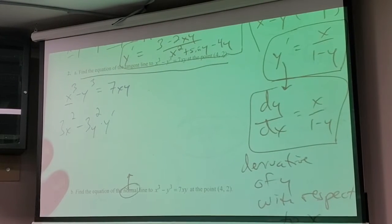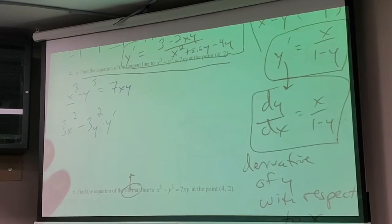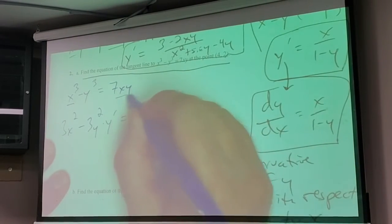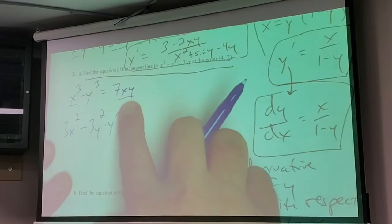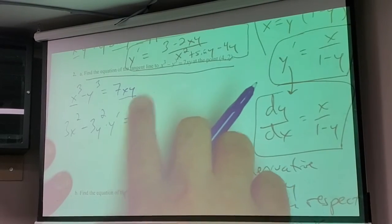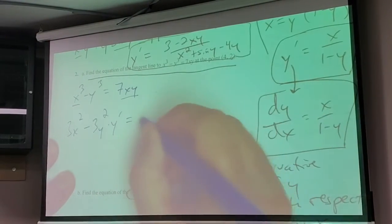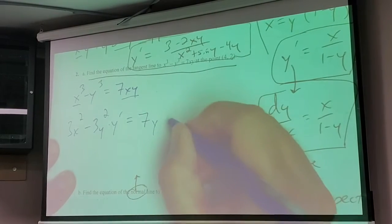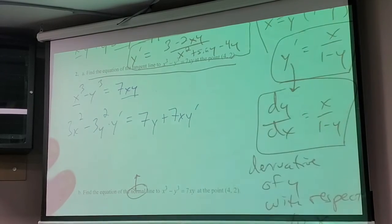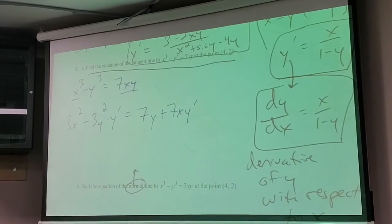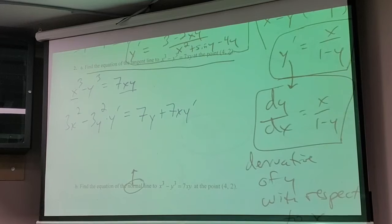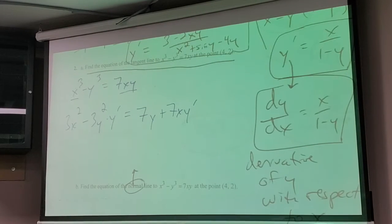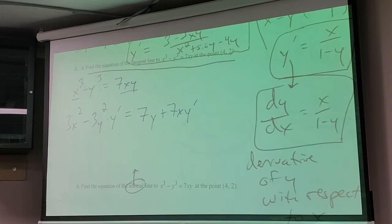Good old chain rule, because y is an implied function of x. Now what do I have to use here? So the derivative of x is one, and the derivative of y is y prime. I just did a product rule — the first piece times the second, plus the first piece times the second.